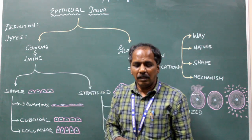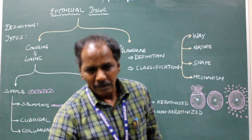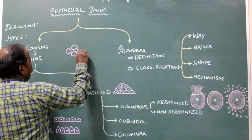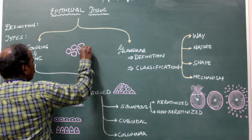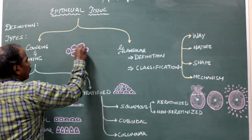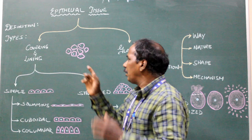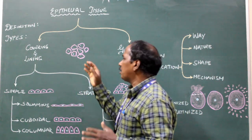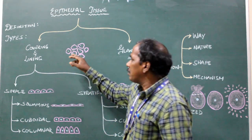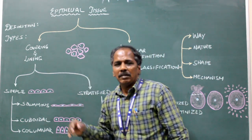What is epithelial tissue? It consists of closely aggregated polyhedral cells with little intercellular substance. Polyhedral means many-sided surfaces. The gap between the cells is very less — the intercellular substance between the cells is very less or may not be present. That is the epithelial tissue.